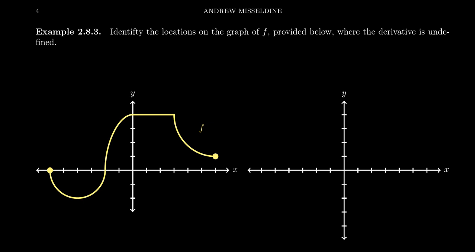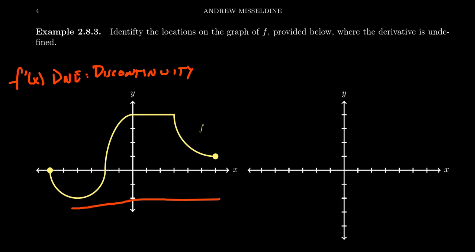The first thing we're going to do is look for places where the derivative would be undefined. We've learned previously that f prime of x does not exist when a couple of things happen. First, you have discontinuities — if there's any place where the function is discontinuous, then the derivative will likewise be undefined. When we look at this graph, it's completely continuous. There's no problem with continuity whatsoever.